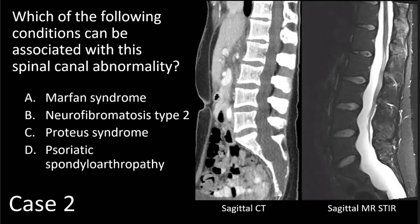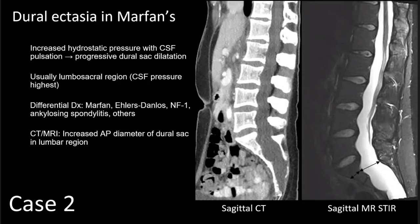The question in this case is: which of the following conditions can be associated with the spinal canal abnormality? Marfan syndrome, neurofibromatosis type 2, proteus syndrome, or psoriatic spondyloarthropathy? Of these choices, Marfan syndrome is the correct answer. You may have deduced that our young patient with history of aortic replacement and pectus repair has Marfan syndrome. This is dural ectasia in Marfan's, related to increased hydrostatic pressure of the cerebrospinal fluid pulsation with associated progressive dural sac dilatation. It usually occurs in the lumbosacral region because that's where the CSF pressure is at its highest.